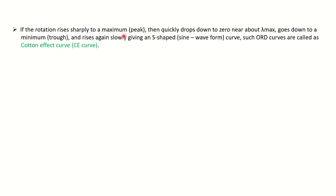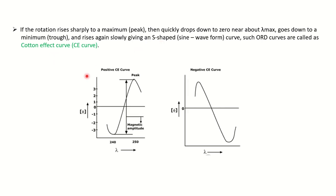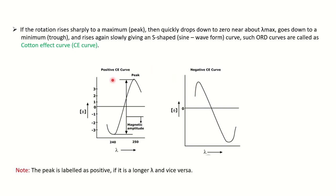Now, if the rotation rises sharply to a maximum peak and then quickly drops down through zero to a minimum and rises again, this gives you an S-shaped curve — that is called the Cotton Effect curve. The rotation sharply rises to a peak, quickly drops to zero, goes down to a minimum, and rises again, giving the S-shaped waveform. This type of ORD curve is called the Cotton Effect curve.